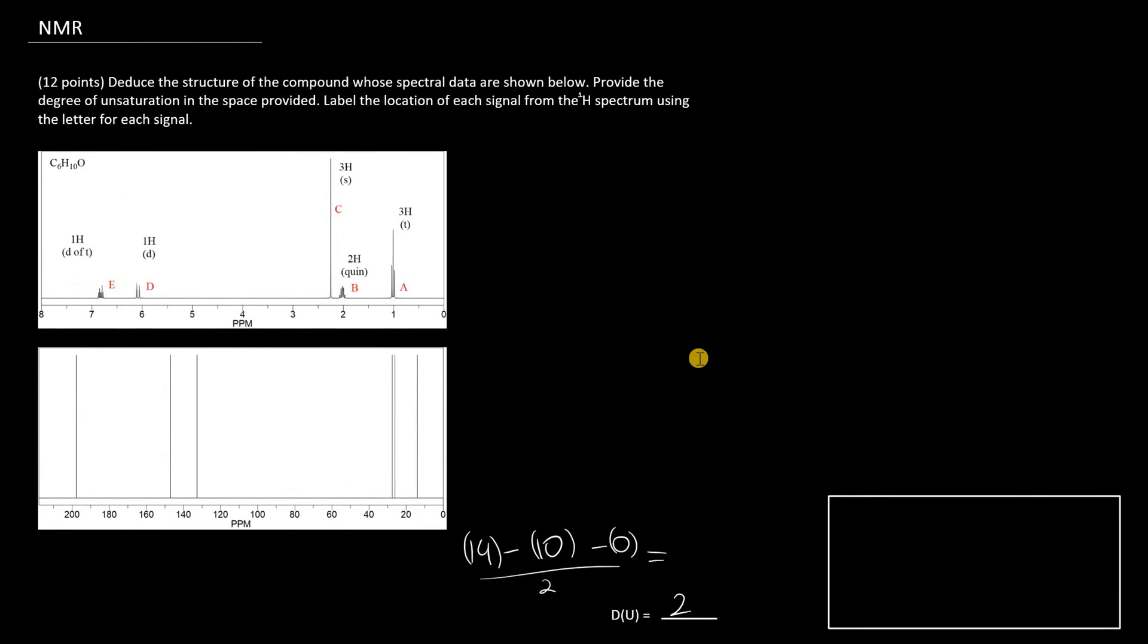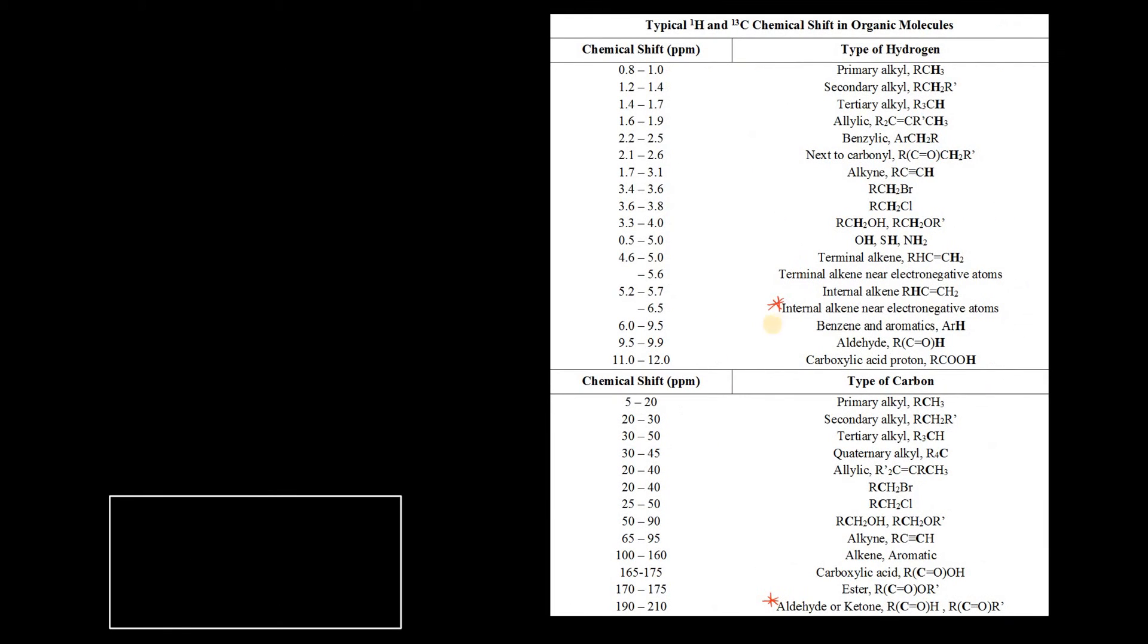because we have oxygen in our compound, it's very likely the alkene is very near to electronegative atoms. In other words, very close to the carbonyl, or as close as possible,